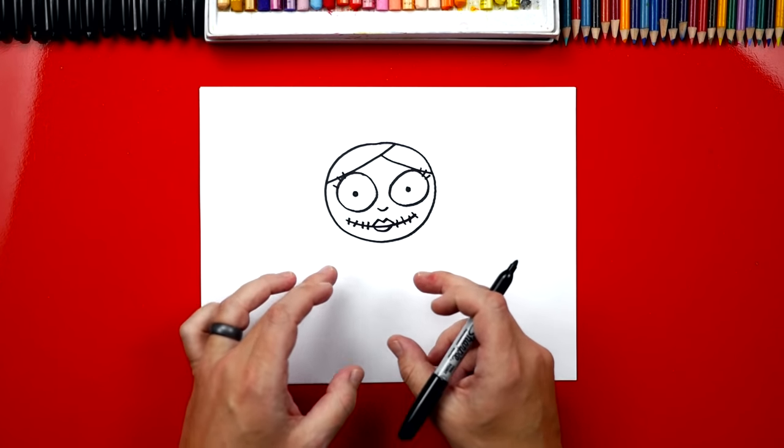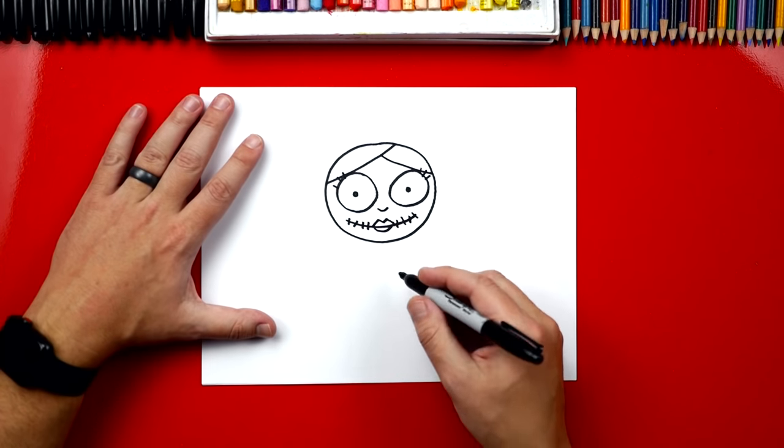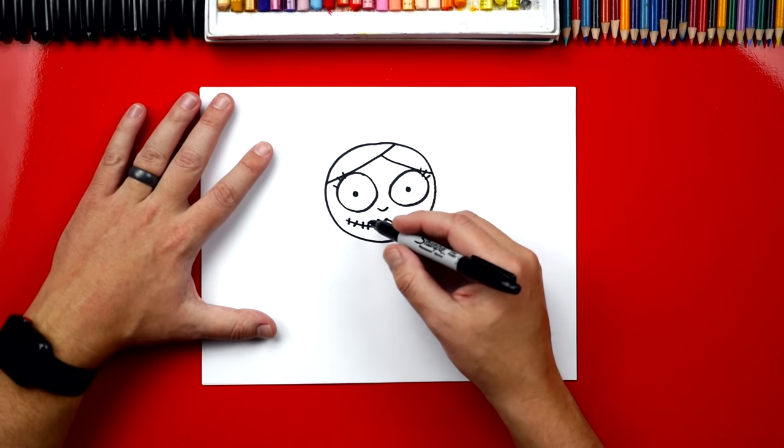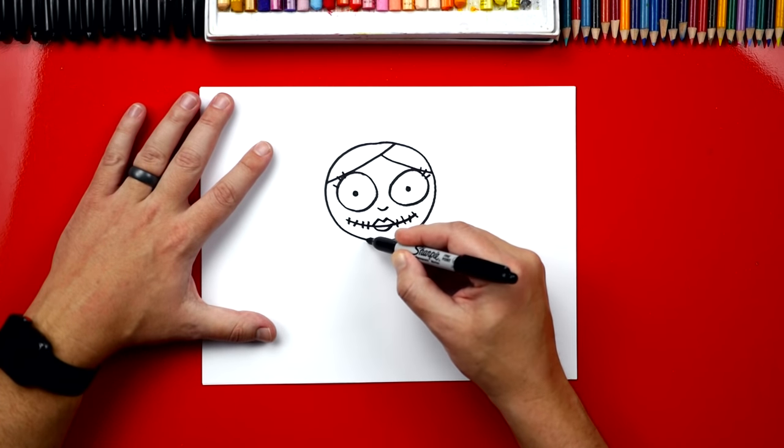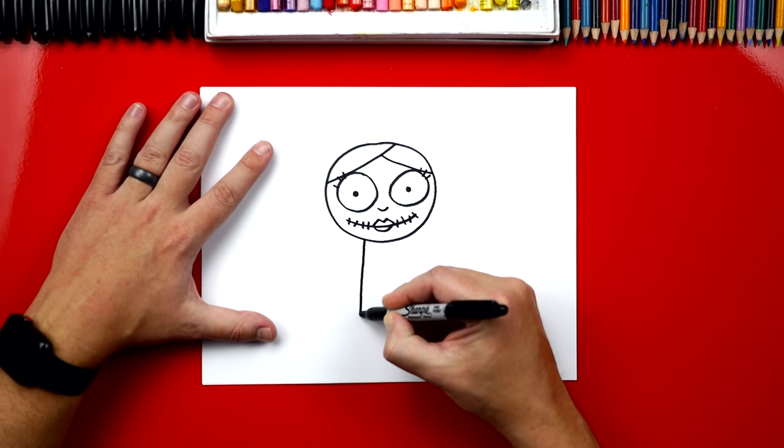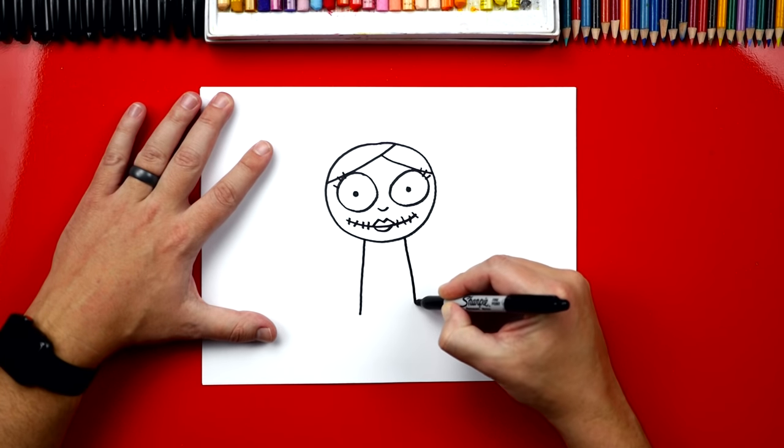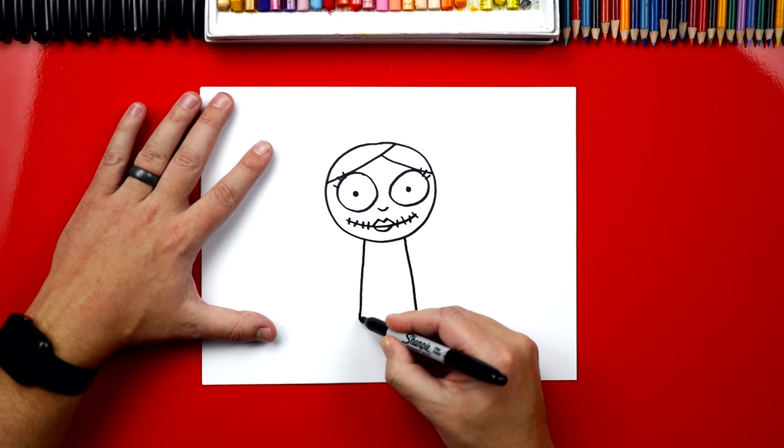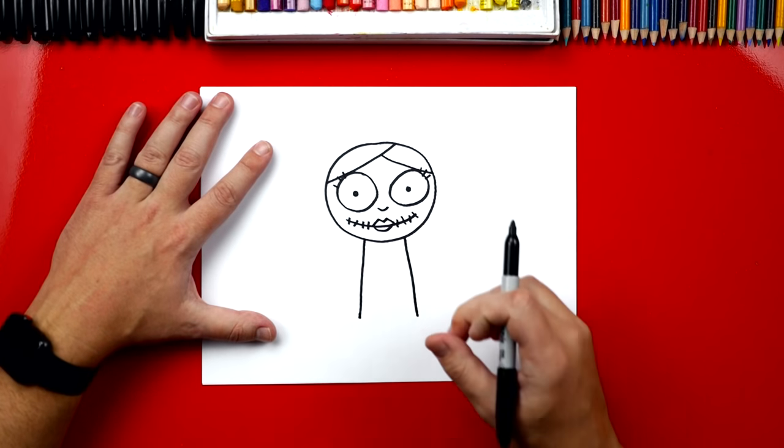Now we're gonna finish her hair a little bit later so that we can draw her body first. Let's draw two lines coming down from her chin. We're gonna draw her kind of skinny because she's really tall and skinny. So draw two lines kind of close to each other and towards the bottom of our paper.